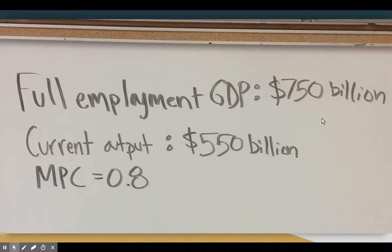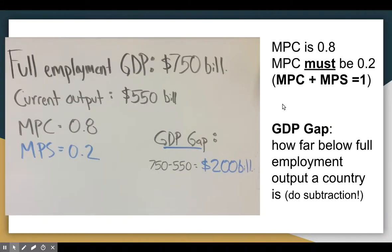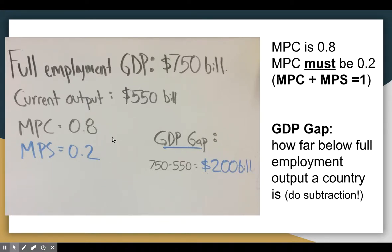Our first step is to find the actual size of the gap we need to close. We do that with basic subtraction: full employment output of $750 billion minus our current output of $550 billion. We see that our gap — we fall short by $200 billion. So we need to encourage $200 billion worth of economic activity. It also never hurts to write down the MPS. We know MPC plus MPS equals one because there are only two things we can do with money: consume and save. So our gap is $200 billion.